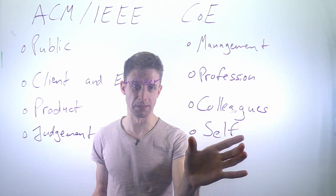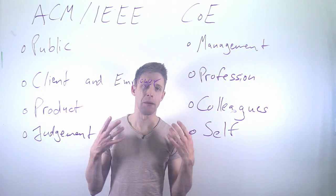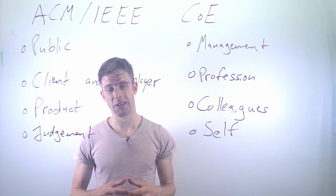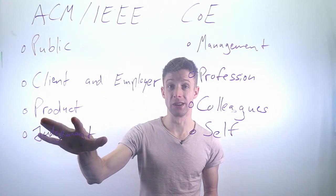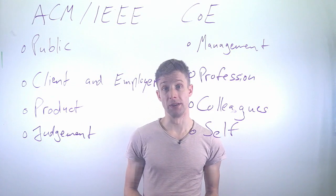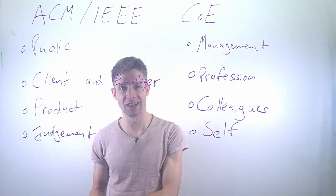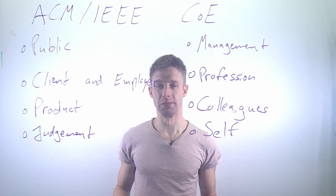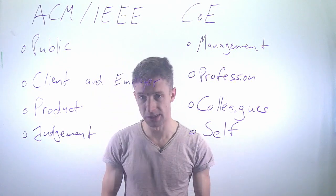Finally, there is the point called 'self' — essentially about lifelong learning and staying updated on current knowledge. It's your duty and responsibility to keep learning because things in the discipline change: techniques change, knowledge changes. If you can build a product well right now, you might not be able to in five or ten years if you don't keep learning about software engineering, programming, and quality assurance. This is the code of ethics that you should definitely know, especially those of you who want to be registered engineers.